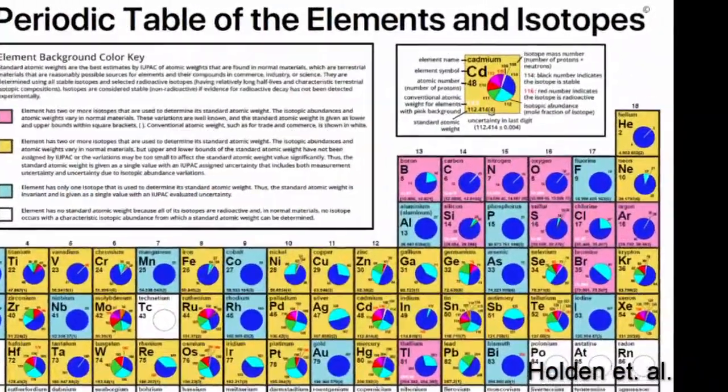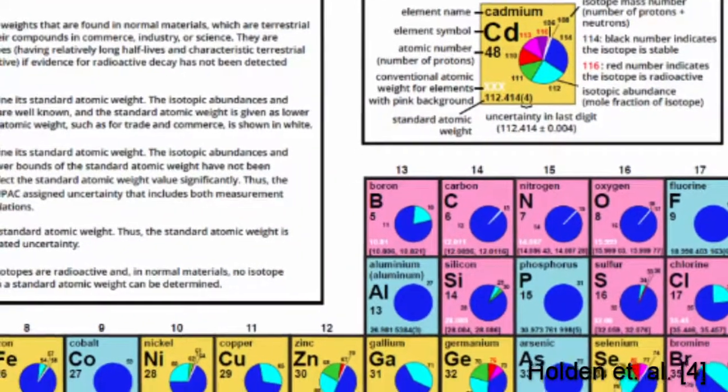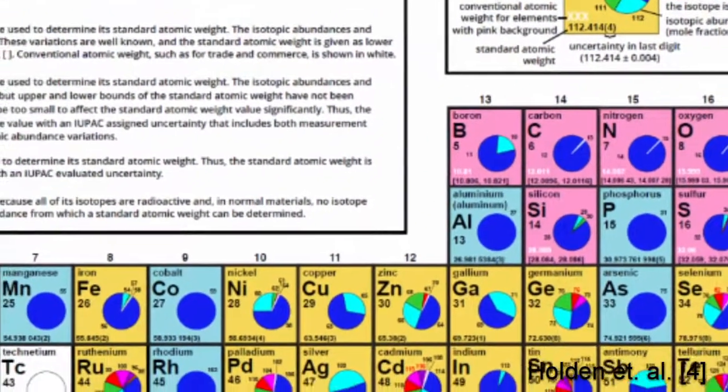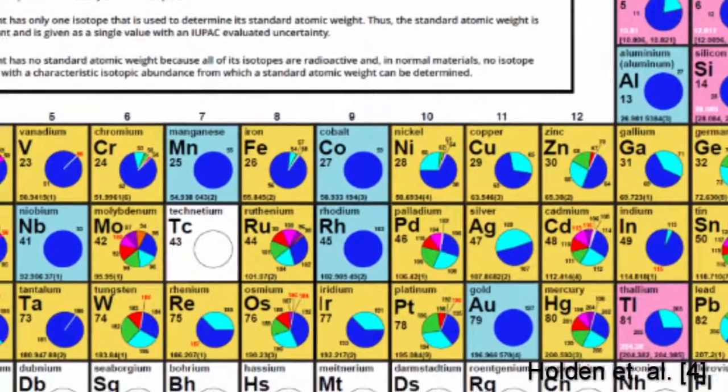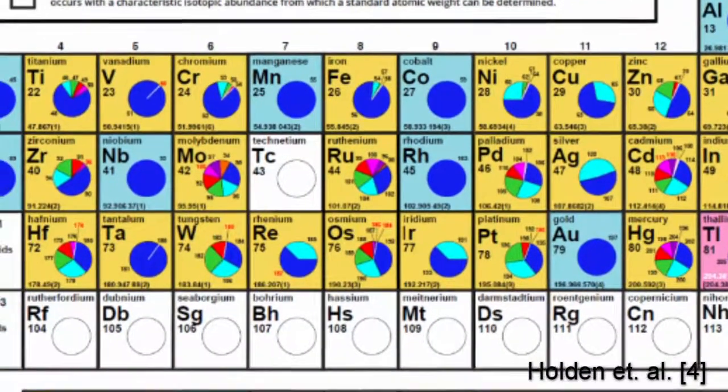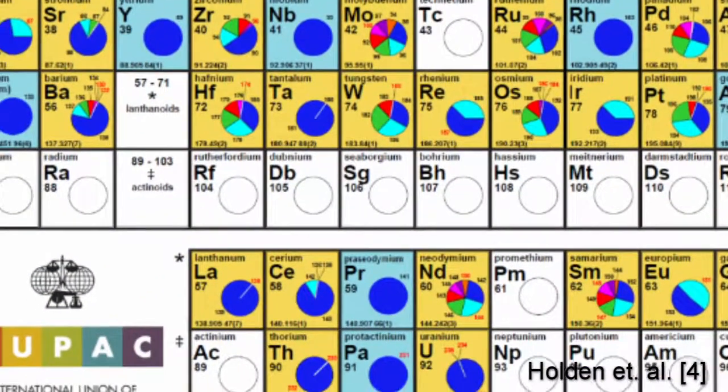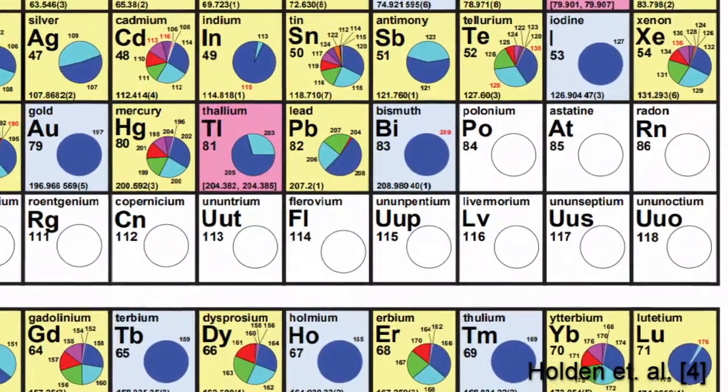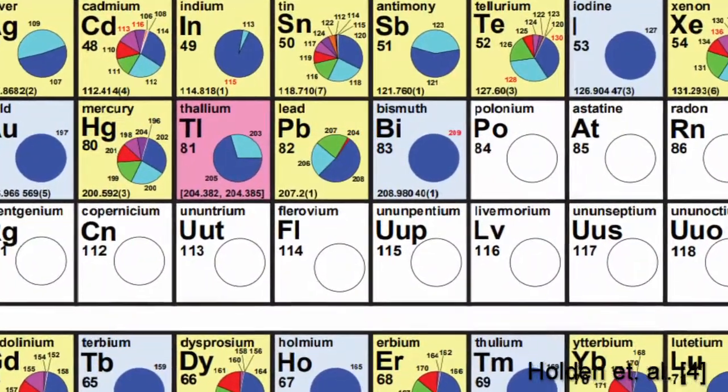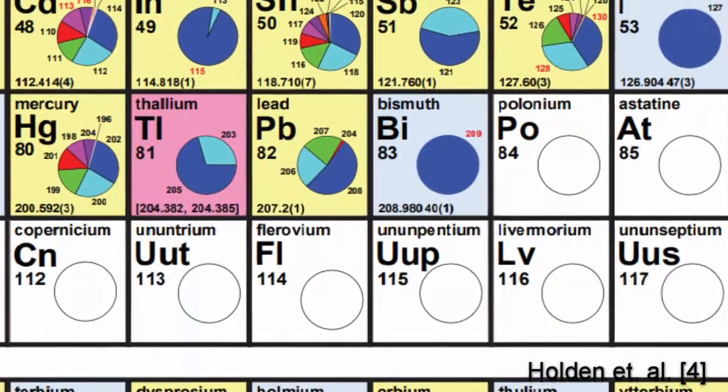One of the surprises during the 10-year preparation of the IUPAC periodic table of the elements and isotopes for the educational community was that the number of chemical elements having a single stable isotope dropped from 20 to 19. In the 2009 table of chemical elements, bismuth is identified as an element with one stable isotope, but in the 2011 table, bismuth is identified as an element having no stable isotopes.